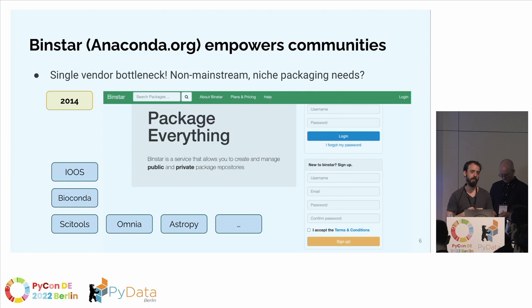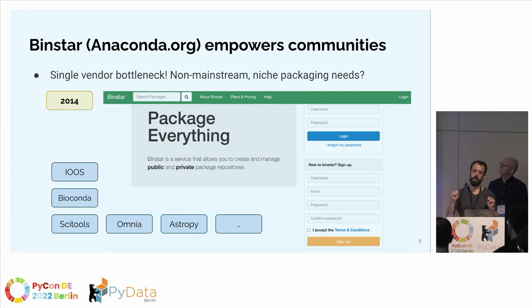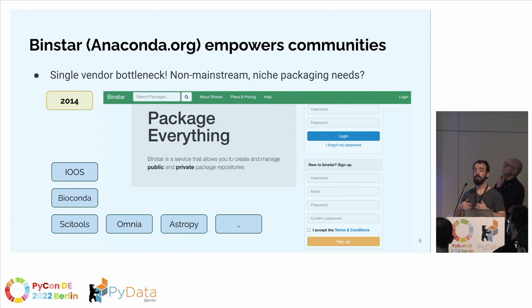However, this introduced more problems. Anaconda (Continuum Analytics) became the single vendor for a lot of packages. A single company can only produce packages for a wider audience — what about niche sub-communities requiring special packages, or research groups wanting to distribute their own tools? This was addressed by introducing a platform where users could upload their own packages, called Binstar, later renamed Anaconda.org, in 2014. Sub-communities like IOOS, Bioconda, SciTools, Omnia, and AstroPy emerged.